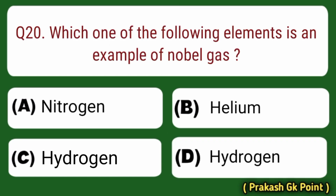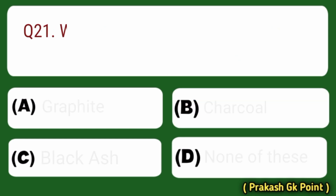Next question: which one of the following elements is an example of a noble gas? Answer: Option B — Helium.